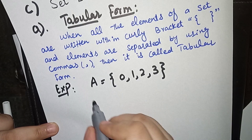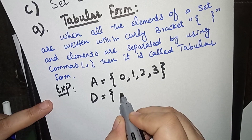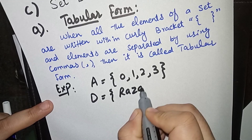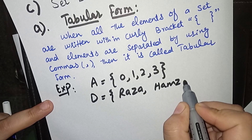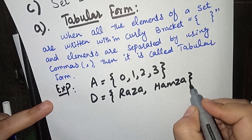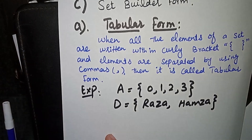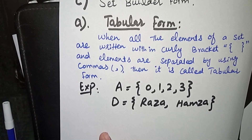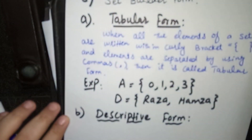Here is an example: A = {0, 1, 2, 3}. Set A has elements zero, one, two, three enclosed in curly brackets, with all elements separated by commas. A second example is D = {Raza, Hamza} — a set of two names, Raza and Hamza, separated by commas and enclosed by curly brackets, as explained in the definition.